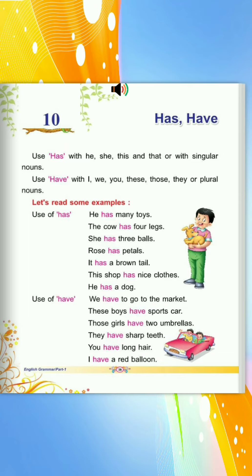Use of 'has': He has many toys. The cow has four legs. She has three balls. Rose has petals.